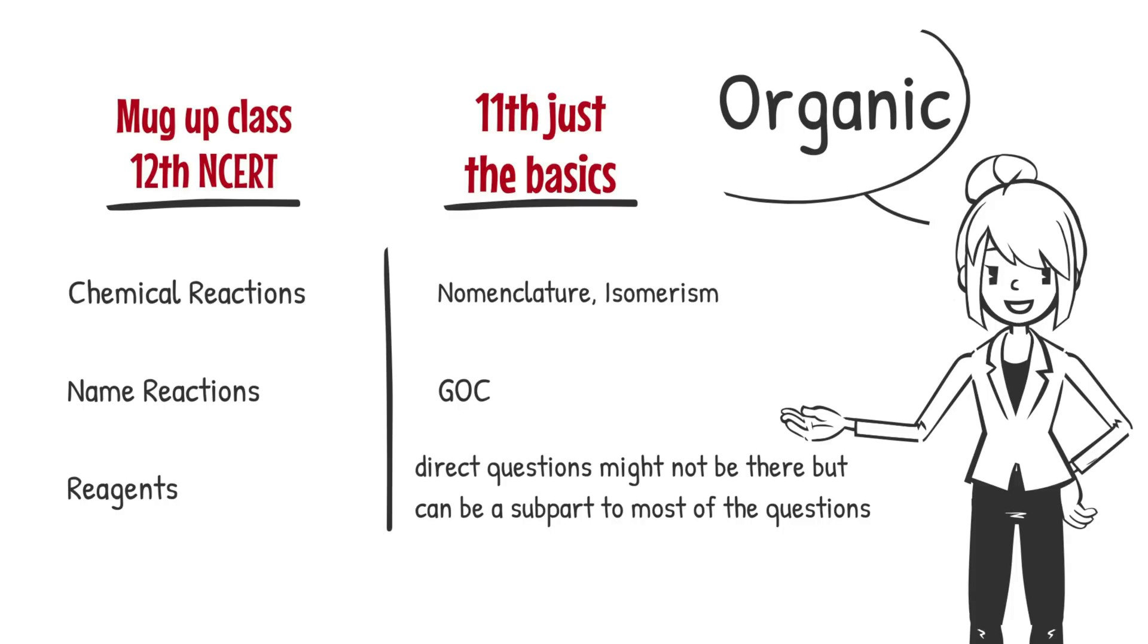In most of the questions, there is a last part like tell the number of isomers, like tell the only geometrical isomers, the only optical isomers. So you have to tell that. So these questions or these chapters become the must to do part of the paper.